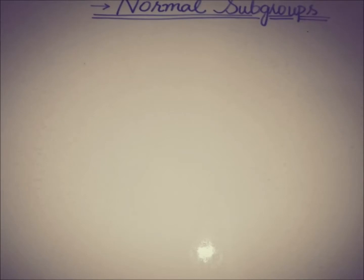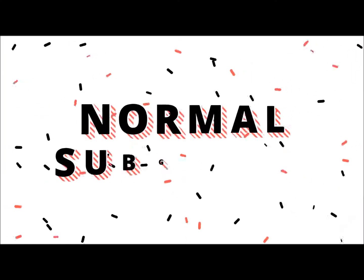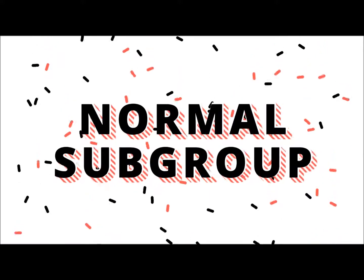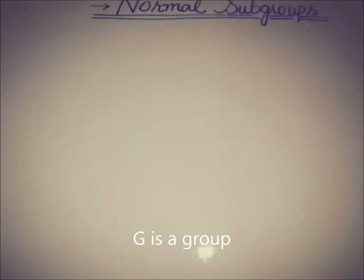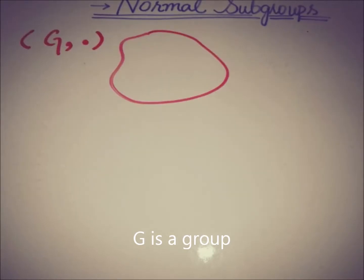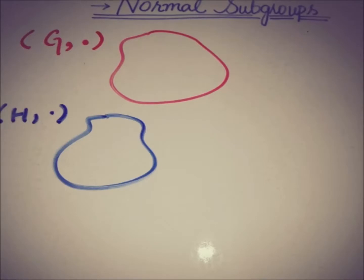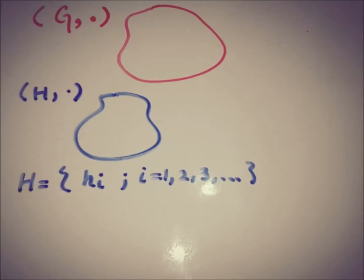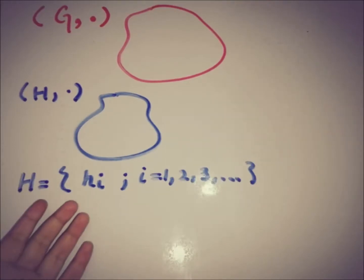Hello everyone, this is DA from eAcademy. Today we are going to see what is a normal subgroup in group theory. We have a group G defined with a multiplicative operation, and H is a subgroup of G on the same operation. H contains elements represented by H_i where i is the index.